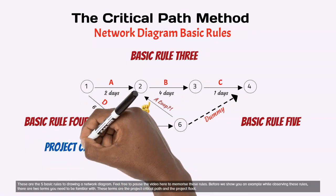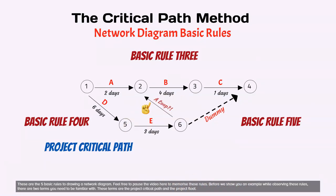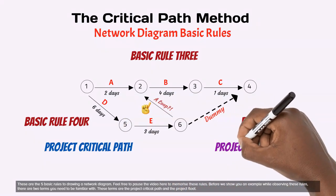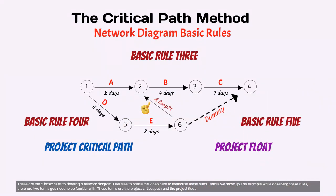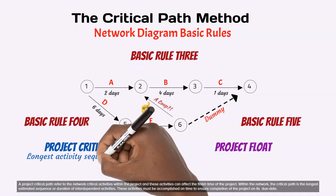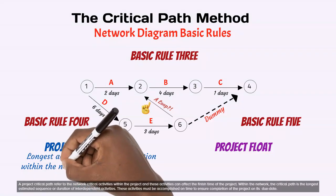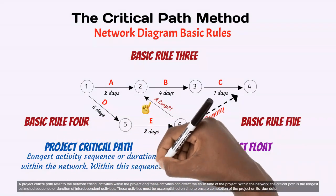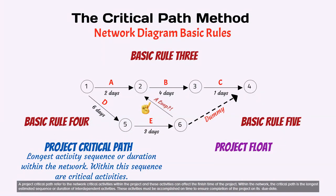Before we show you an example while observing these rules, there are two terms you need to be familiar with. These terms are the project critical path and the project float. A project critical path refers to the network critical activities within the project and these activities can affect the finish time of the project. Within the network, the critical path is the longest estimated sequence or duration of interdependent activities. These activities must be accomplished on time to ensure completion of the project on its due date.